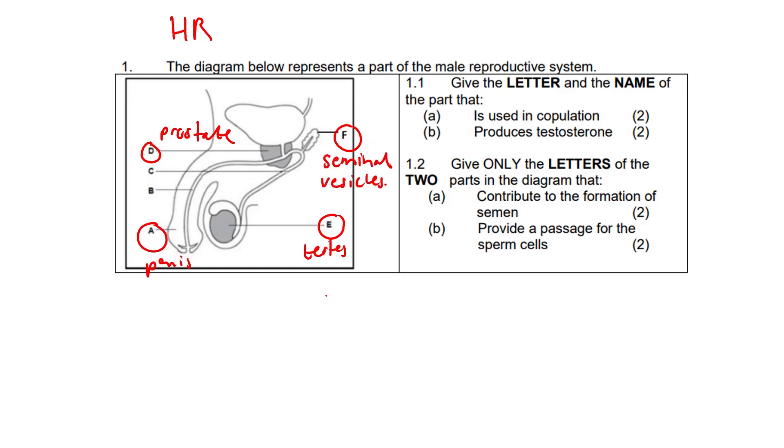And B, that provide a passage for the sperm cells. Answers here are going to be C and B, C being the sperm duct and B the urethra. So answers were A, E, D, F, and C, B. Question two.